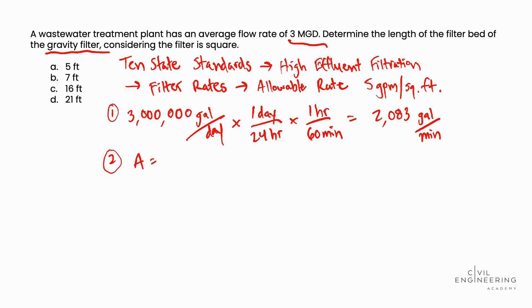Over the allowable flow rate from the 10 state standards we found of 5 gallons per minute per square foot. And solving for the area, we determined that the required surface area is 416.6 square feet.